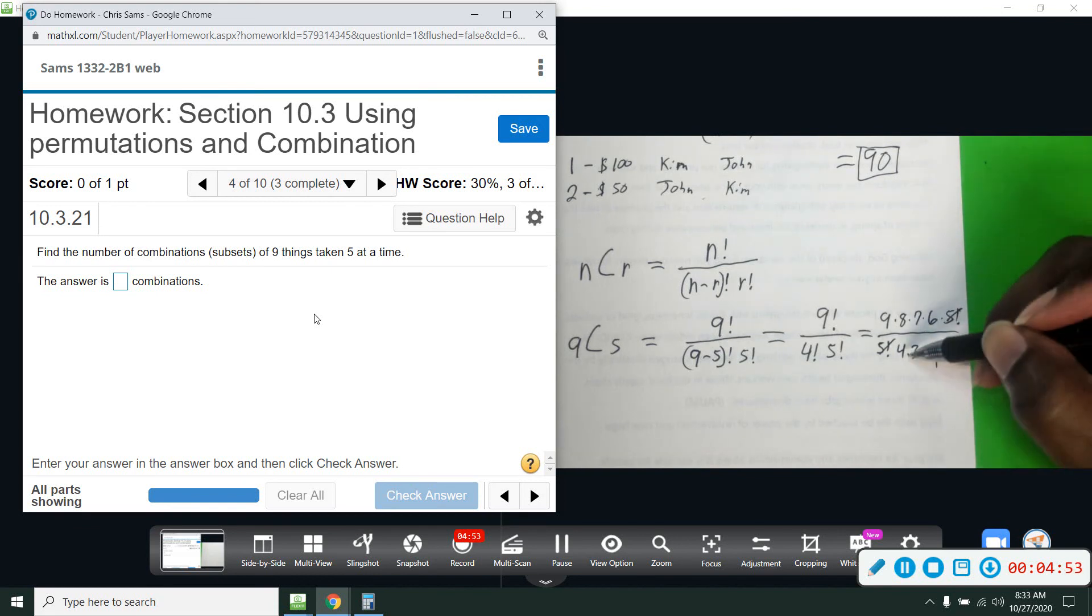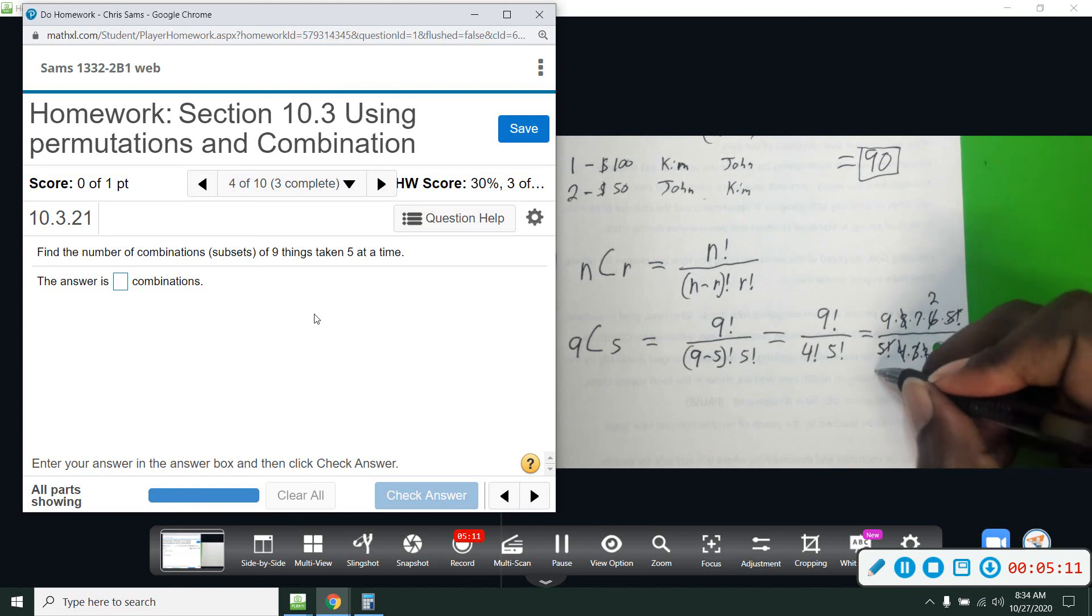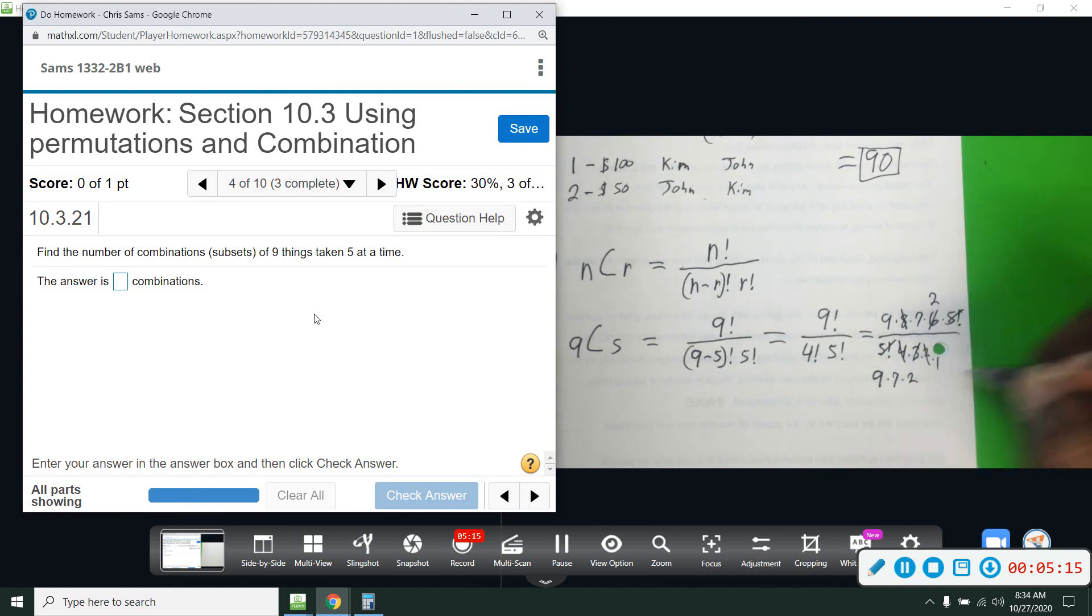Alright, so I want to reduce as much as I can. Four times two is eight. That will get rid of the four and the two and the eight. Three times one is three. Six is divisible by three. So divide by three and this number becomes a two. So all we have to do is multiply nine times seven times two. That's what we have left after we reduce everything we can. Sixty-three, one-twenty-six.